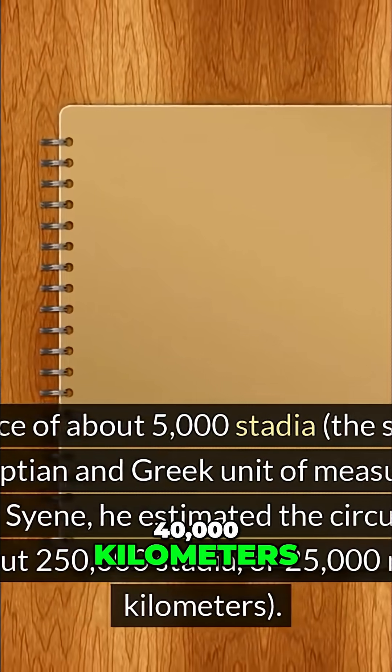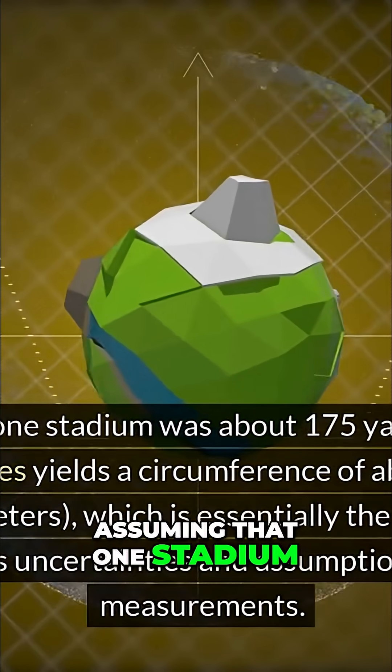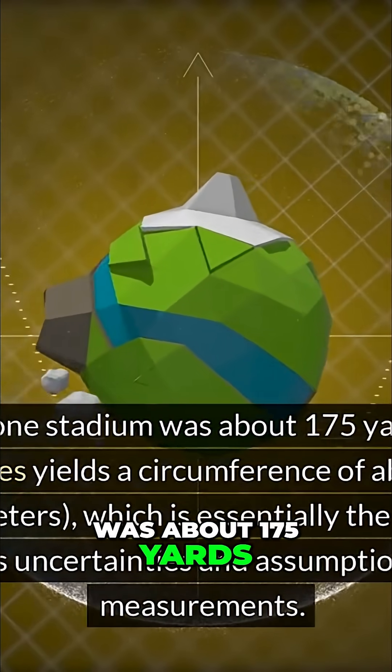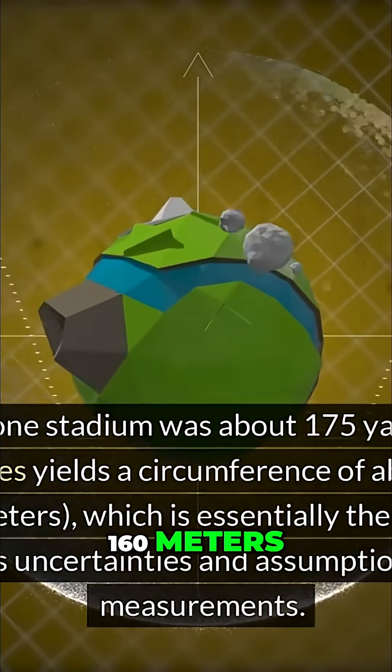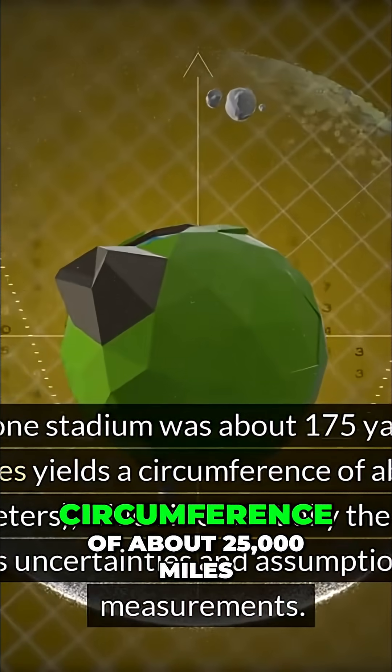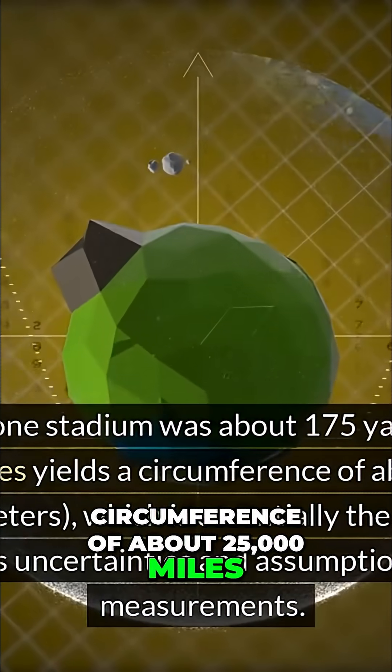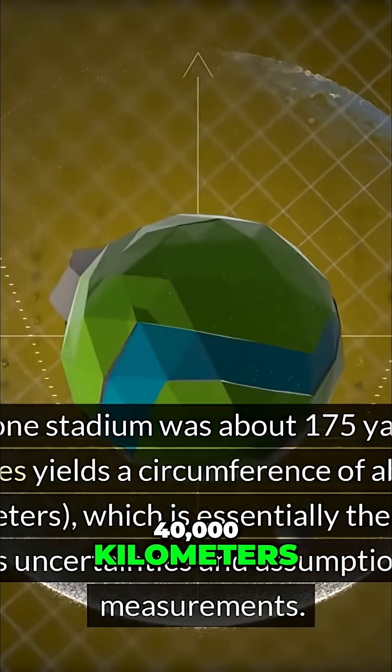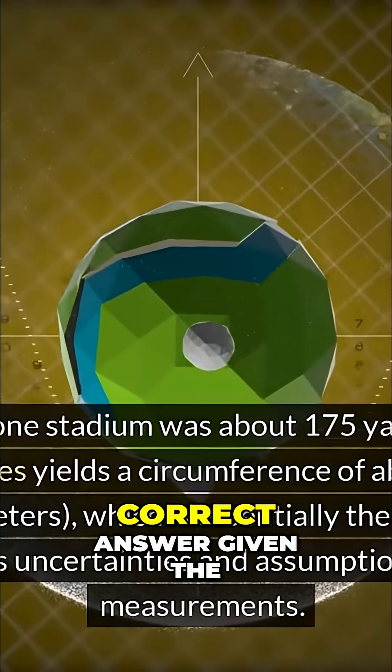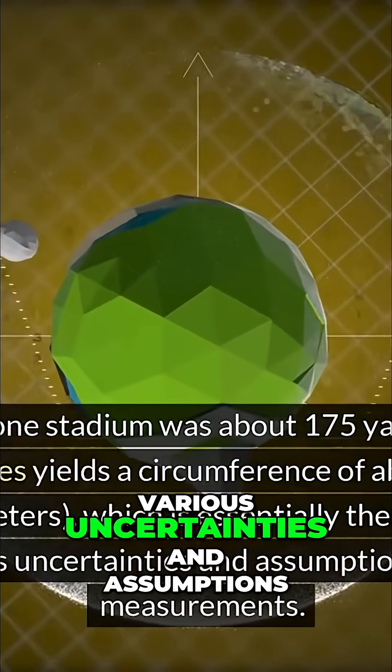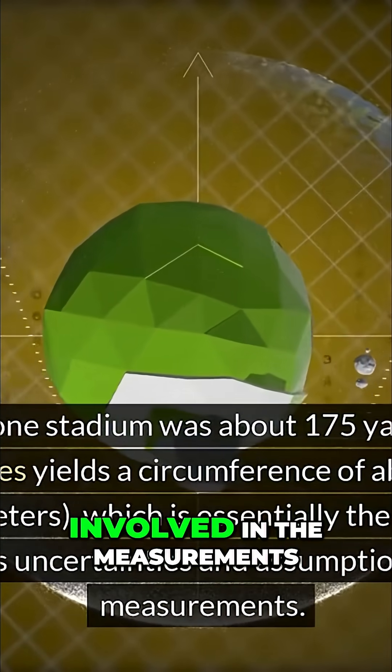Assuming that one stadium was about 175 yards (160 meters), Eratosthenes' calculation yields a circumference of about 25,000 miles (40,000 kilometers), which is essentially the correct answer given the various uncertainties and assumptions involved in the measurements.